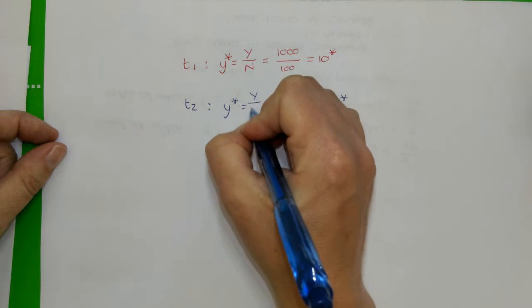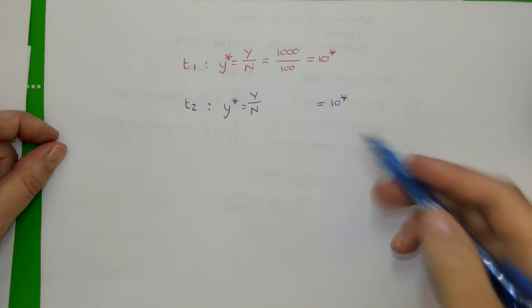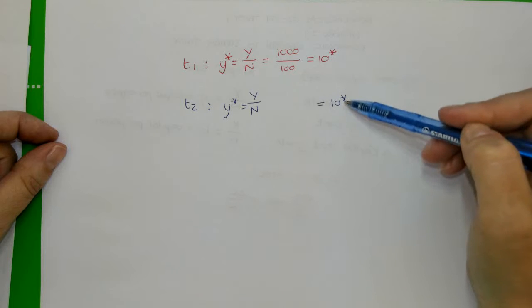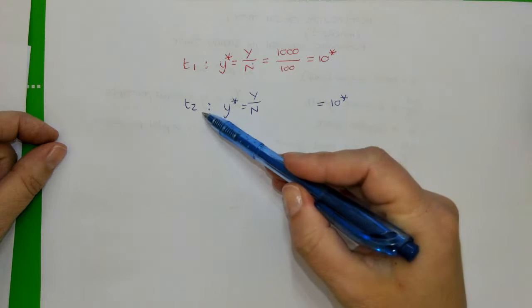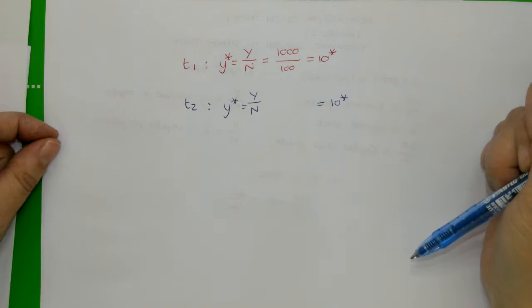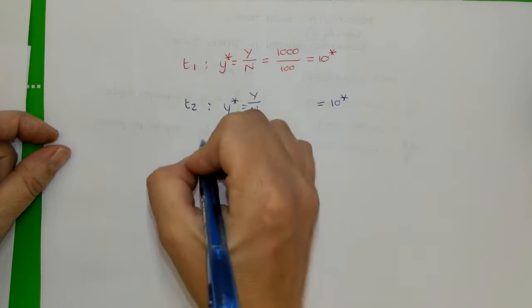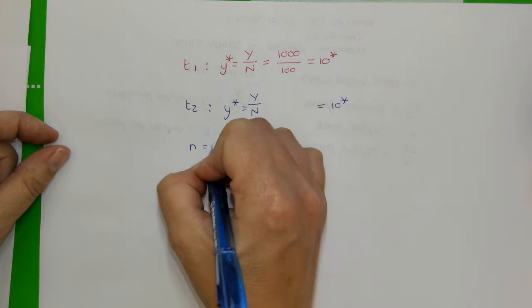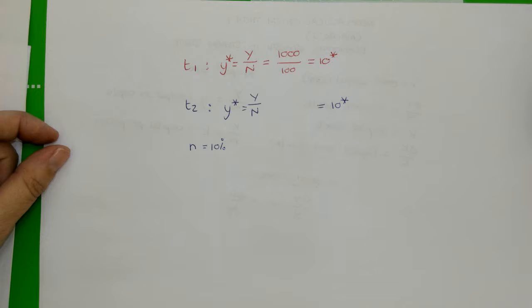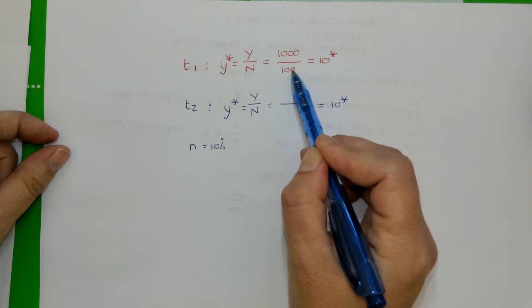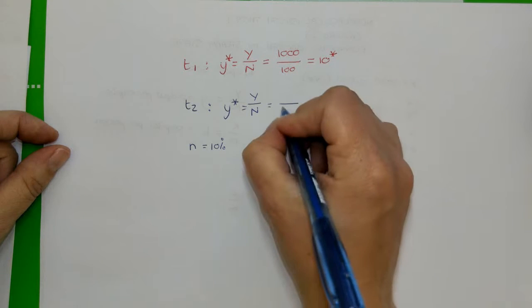So what we're trying to understand is that in time period two, our amount of output per person must still be equal to 10. Output per person is equal to Y over N. But what we now need to ask ourselves is: what must happen to the values of total output and of the population size to ensure that output per person remains at a value of 10 in time period two? The problem is that output and the population size are not constant — they do change over time. We know that the population is growing at a rate of n. Let's say that the population growth rate is 10%, meaning that in the second period, our population is no longer going to be 100 — it's going to be 110.